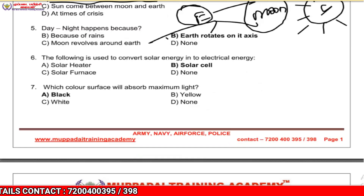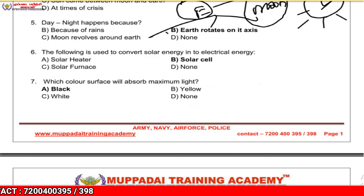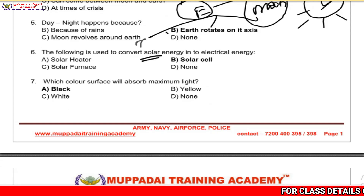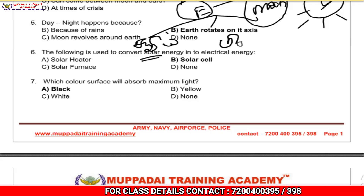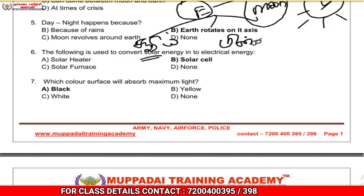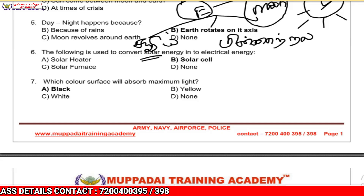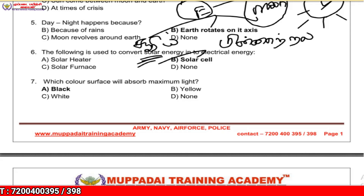Question 6: Which of the following is used to convert solar energy into electrical energy? The answer is a solar cell. Solar energy is converted via a solar cell.